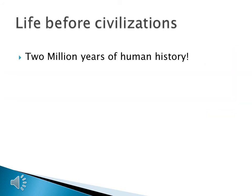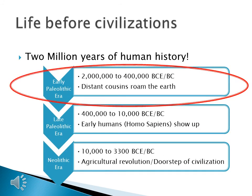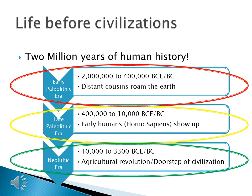Now that we've learned 2 million years of human history, let's sort these events chronologically. The Early Paleolithic era spans 2,000,000 BCE to 400,000 BCE, when our distant cousins roamed the earth. The Late Paleolithic era spans 400,000 BCE to 10,000 BCE, when early humans — Homo sapiens — appeared. The Neolithic era spans 10,000 BCE to 3,300 BCE, which is the Agricultural Revolution, putting us on the doorstep of civilization. I hope you enjoyed this lecture and I look forward to seeing you in class.